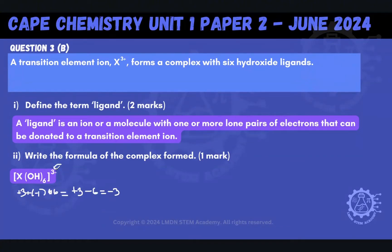So this is the charge on the complex ion, and these are the species that make up that complex ion.